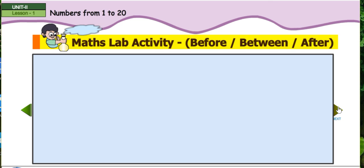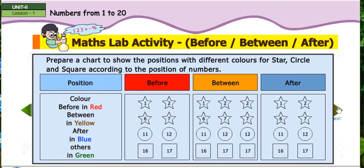Math Lab Activity. Before, between, after. Prepare a chart to show the positions with different colors for strap, circle and square according to the position of numbers.